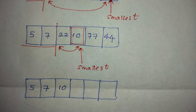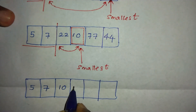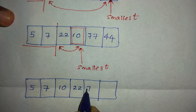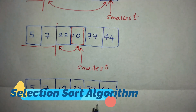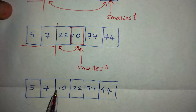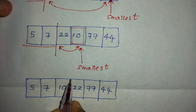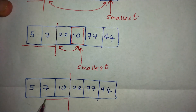Now the next smallest element is 22. If you draw a straight line from 10, you can see that 22 is already in the correct position — it's in the correct order, it's the smallest one after 10, so no swapping is needed.